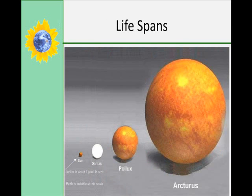The lifespan of a star is determined by its initial size and mass. Supergiant stars exist for only about a million years. Giant stars exist for 20 million years, and main sequence stars can exist for about 10 billion years. Our sun is sitting at about halfway through its lifespan at this point.